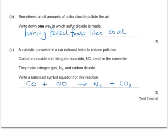Now, balancing this equation: on the left we have one carbon, and on the right one carbon. On the left we have one nitrogen, but on the right we have two, so we put a 2 in front of NO on the left. Then we look at oxygens: on the left we have one, two, three; on the right only two. So we increase the oxygens on the right by having two carbon dioxides. This upsets the carbons — we now have two on the right and only one on the left — so we put a 2 in front of CO on the left. Quick check: two carbons on each side, four oxygens on each side, two nitrogens on each side. The balanced equation is 2CO + 2NO → N2 + 2CO2. It all balances.